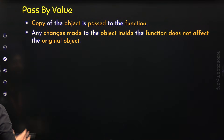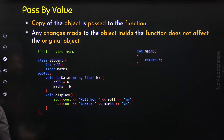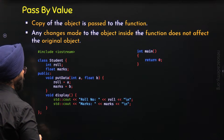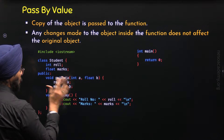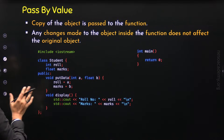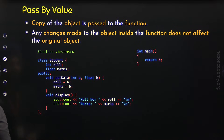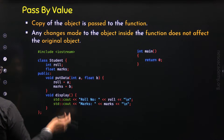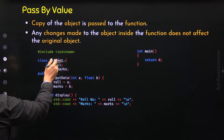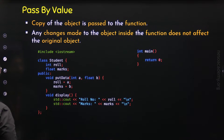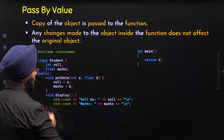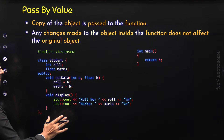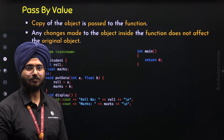To understand this properly, let's take one example program. Here I have defined the class Student with private members role and marks, where role represents the role number and marks is used to store marks of a specific student.